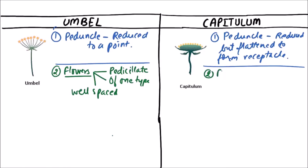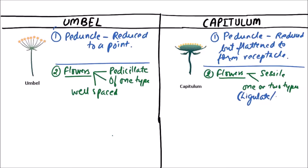While in capitulum, the flowers are sessile, that is stalkless. These may be of one or two types, that is either ligulate or tubular, or both, and these are closely placed.